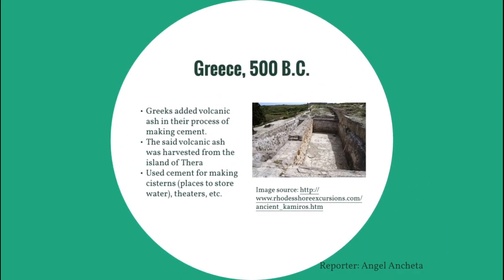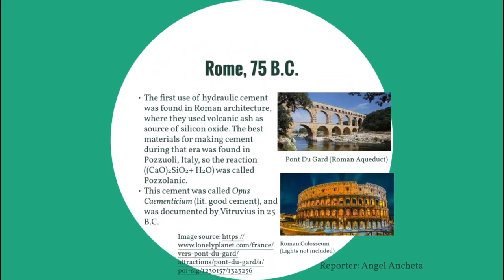One example of structures built using these materials are the pyramids of Giza. At 500 BC, the Greeks added volcanic ash harvested from the island of Thera in their cement-making process. Because of the volcanic ash addition, the resulting cement became water-resistant and suitable for making cisterns. An example is found in Cameros on the island of Rhodes. The Romans further improved on the Greeks' invention, and at 75 BC, the first use of hydraulic cement was found in Roman architecture using volcanic ash as a source of silicon oxide. The best materials were found in Pozzoli, Italy, so the reaction was called Pozzolanic.